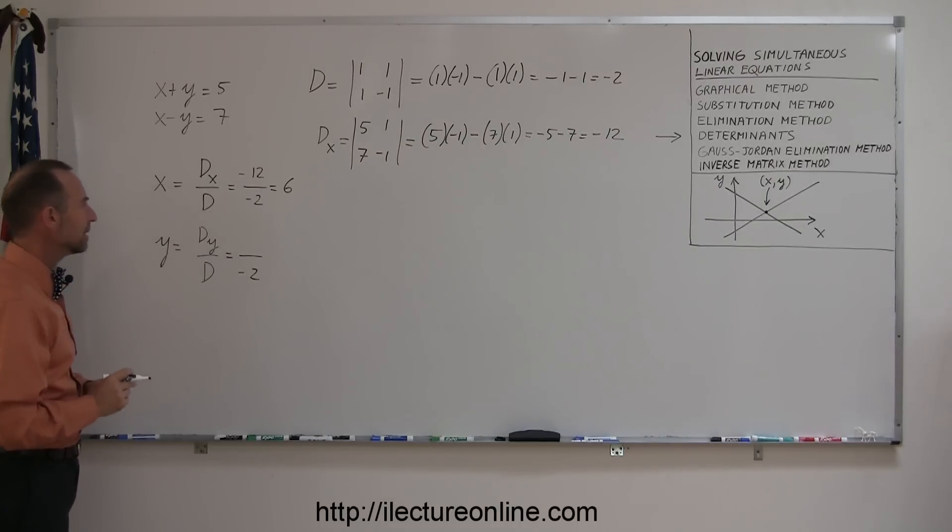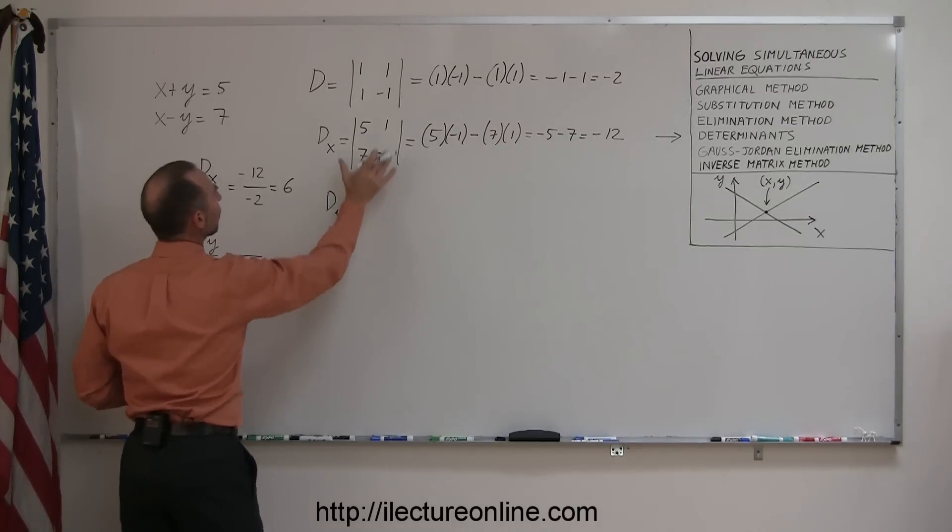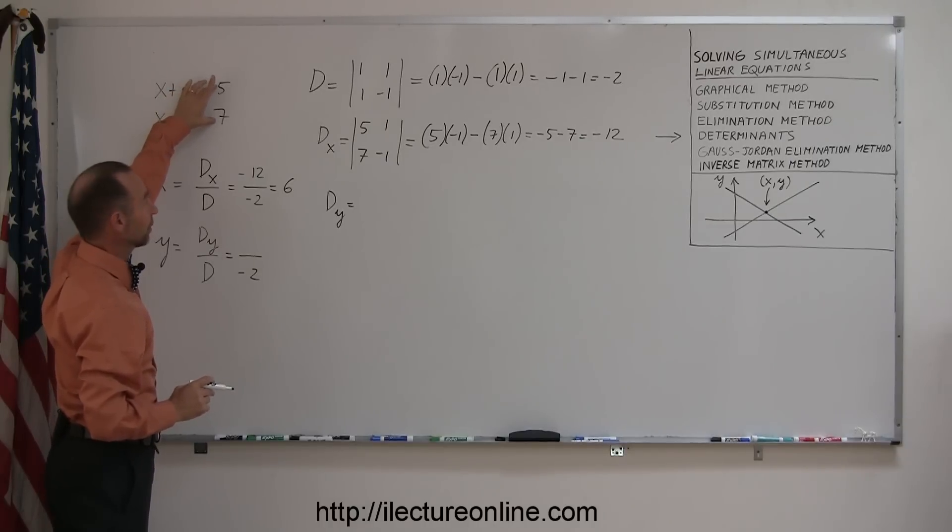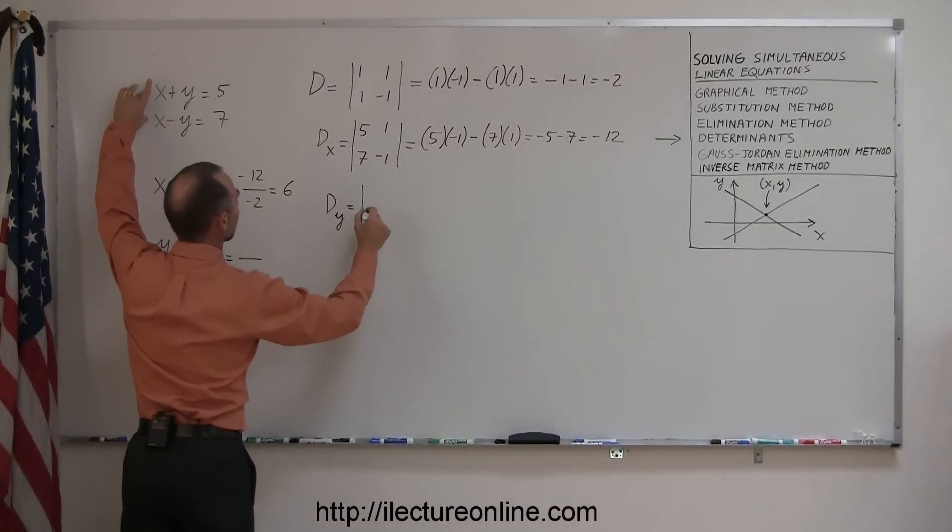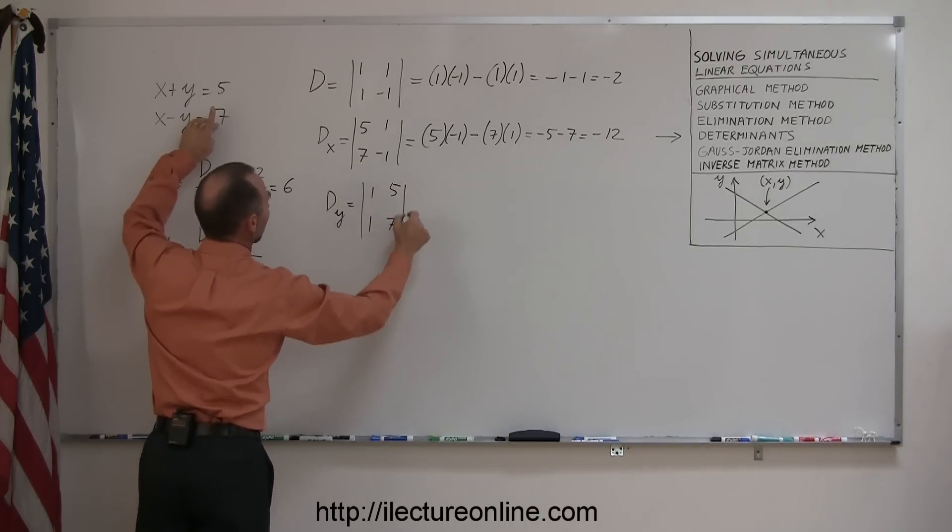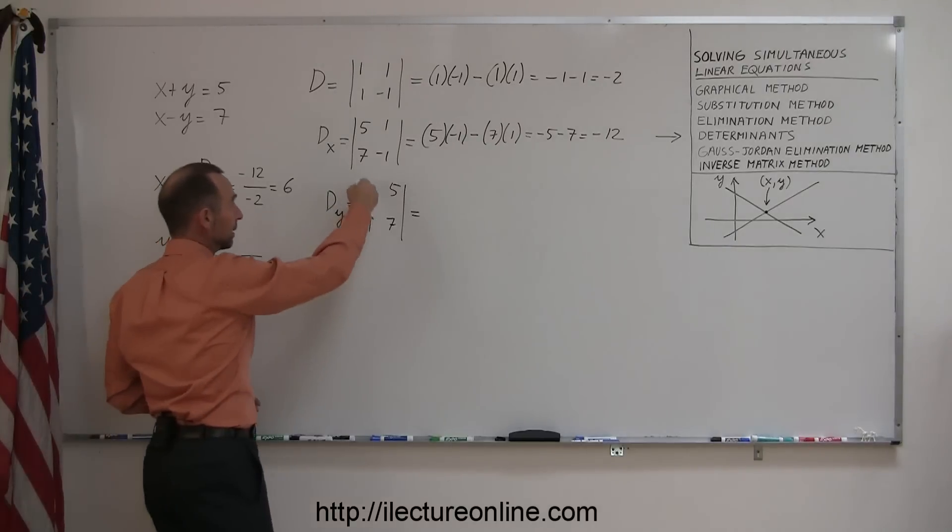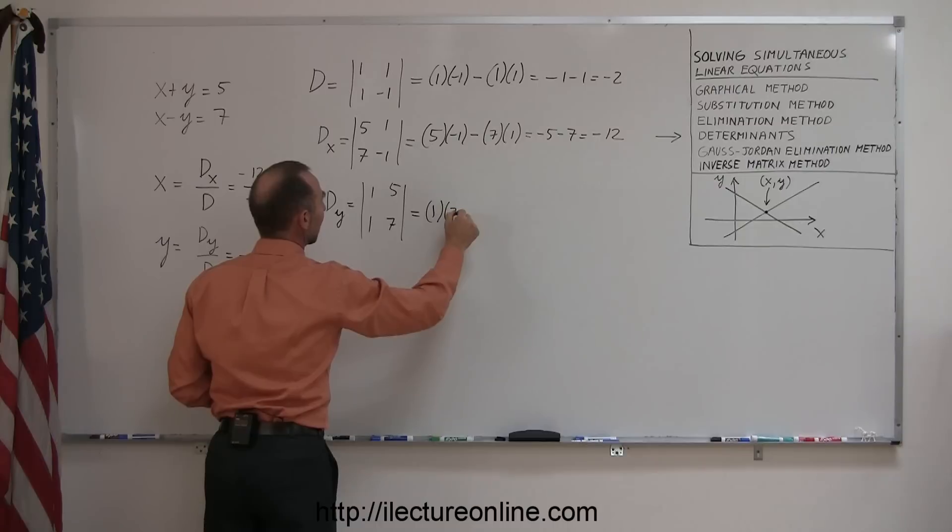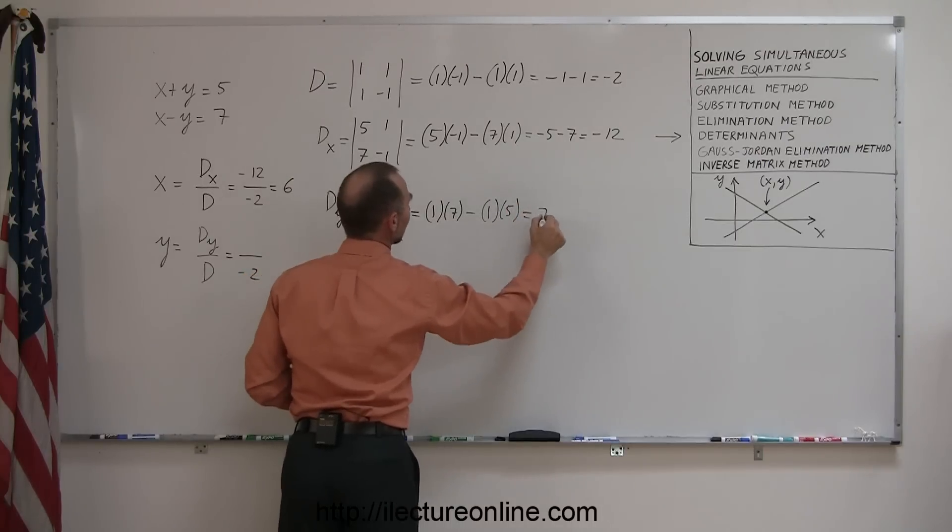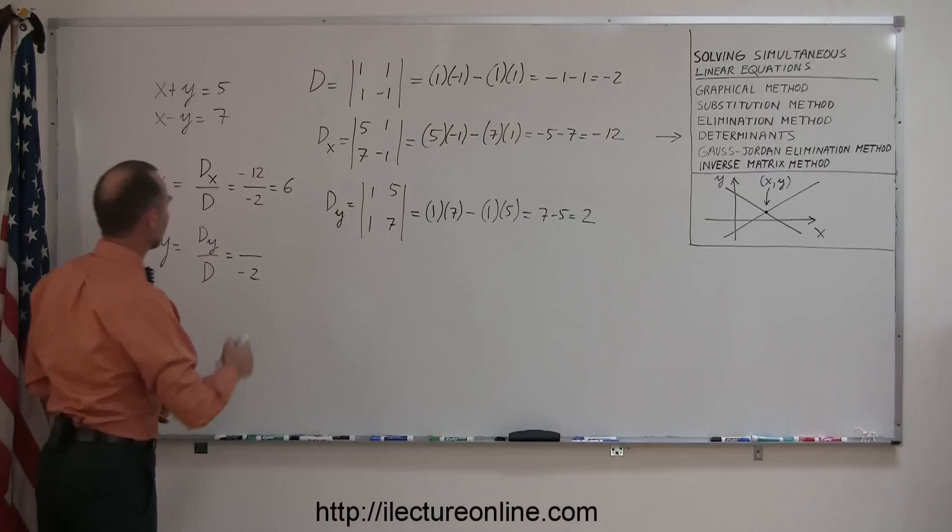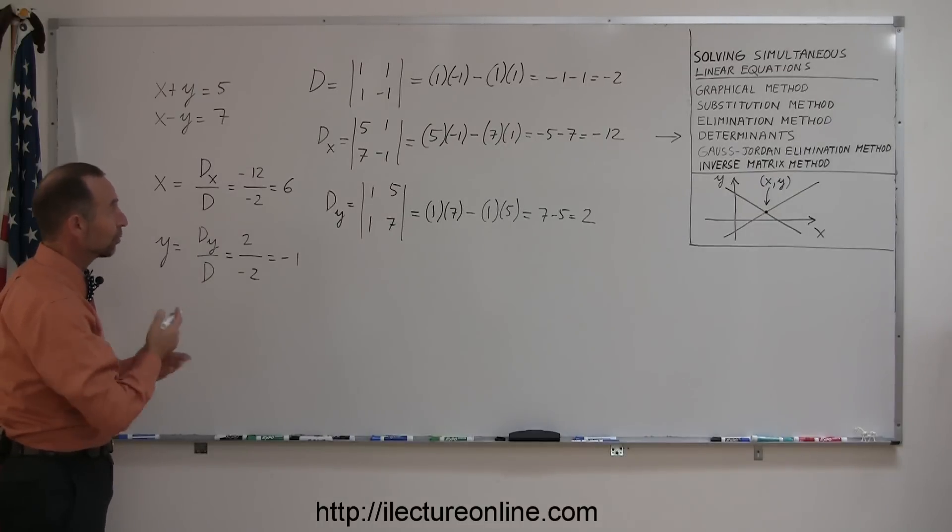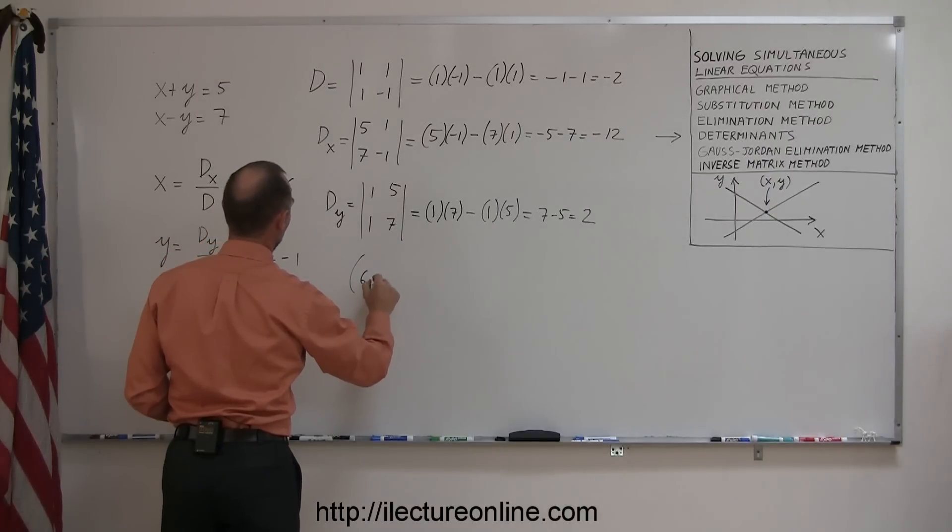Now we calculate d sub y. The d sub y is equal to the same determinant, except with the coefficients for the y variable replaced by 5 and 7. We keep the x coefficients and replace the plus 1 and minus 1 with plus 5 and plus 7. To calculate the determinant, we multiply 1 times 7 and subtract 1 times 5. This is 7 minus 5, or 2. So 2 divided by negative 2 is minus 1, the y coordinate. The solution is 6 and minus 1.